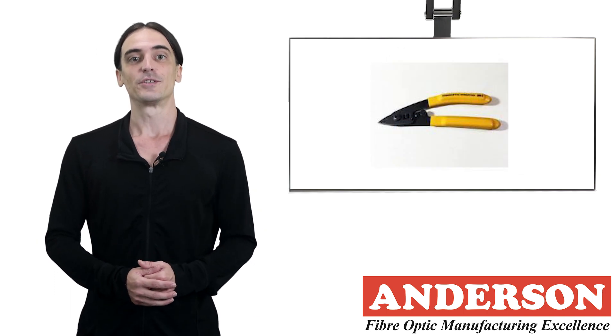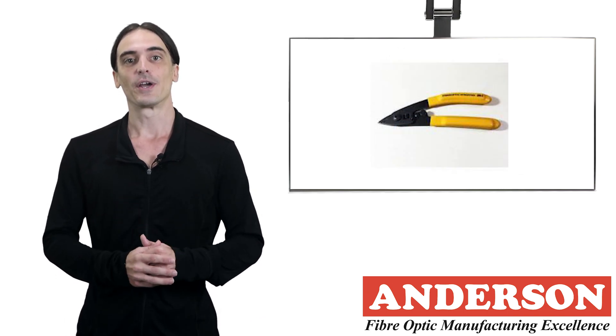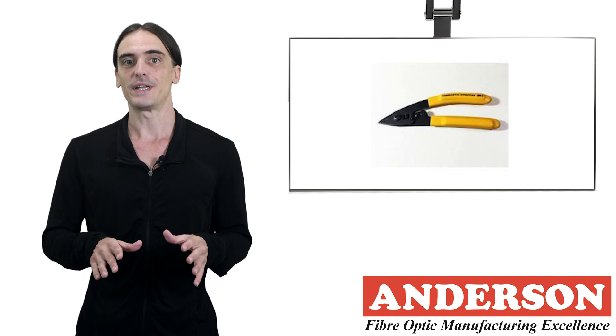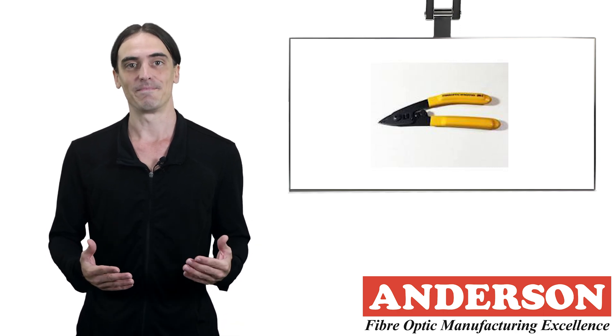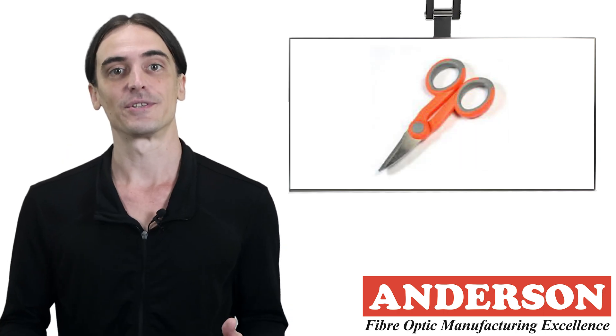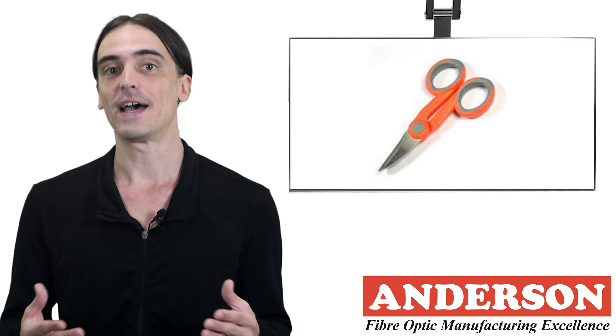A fiber optic stripper. This tool is used to remove the primary coating of a fiber, 250 to 900 micron, without damaging it. Then we have Kevlar scissors. This tool is used to remove any Kevlar in the cable.